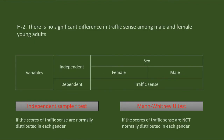Then I shall check if there is a difference between females and males in traffic sense. Here there are two independent samples — females and males. If the scores of traffic sense are normally distributed, I shall go for an independent samples T-test. Otherwise, I shall use the Mann-Whitney U test.